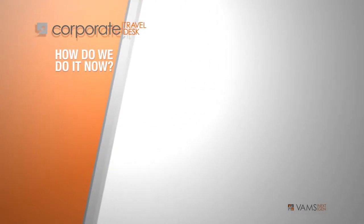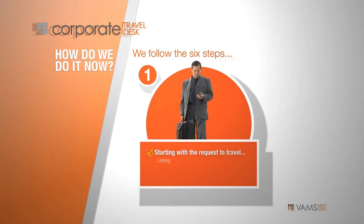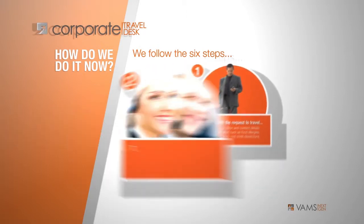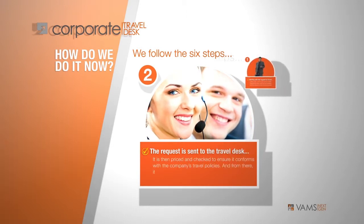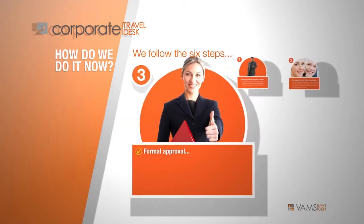How is corporate travel managed today? Well, it's a six-step process. It starts when someone fills out a request for travel form listing name, position, and contact details, plus the travel services and dates of travel. The form also carries special information such as food allergies and the company's cost code dissections.